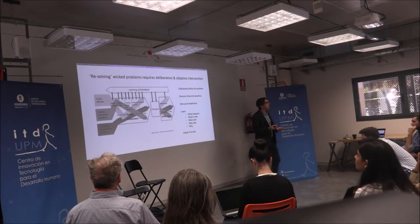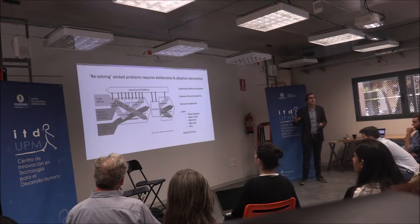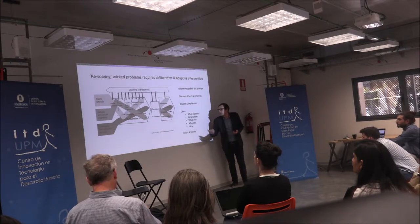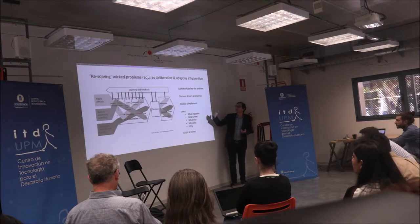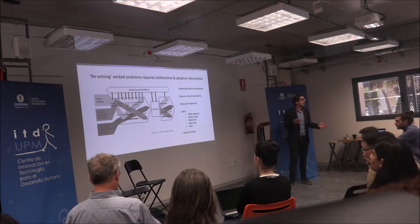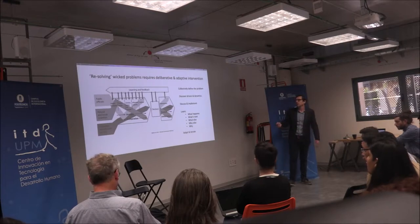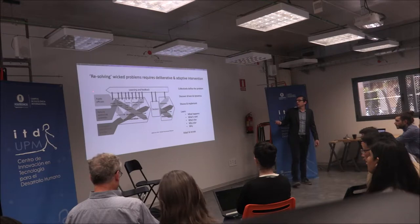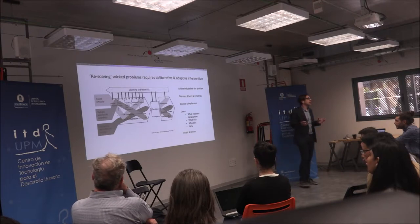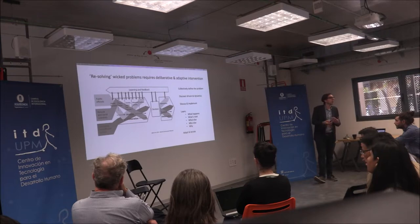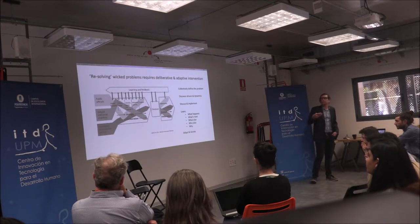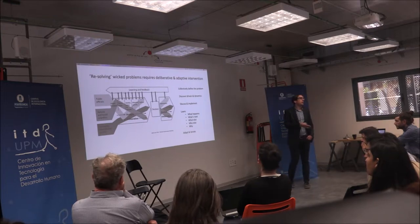So how do we actually go about addressing a wicked problem? If we can never actually solve it, if we can never identify the full number of stakeholders? Good practice in solving wicked problems involves understanding who all the stakeholders are — at least at some scale — and making decisions around who to involve. Bring them together. Discover what each of their different perspectives are, what their definition of the problem is, what their objectives are, what resources they bring, what knowledge they bring. So it starts with a process of co-inquiry among all the stakeholders — trying to discover what the drivers are, what the dynamics are, and how stakeholders relate to and interact with each other.